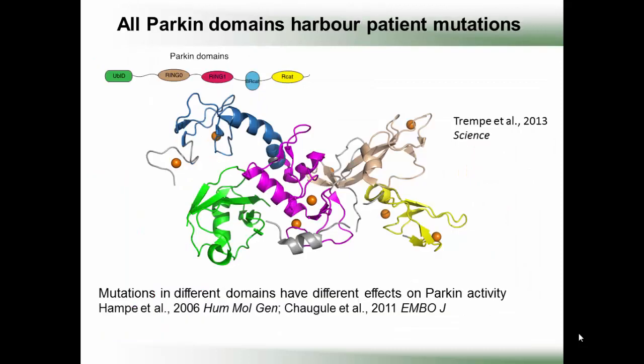Parkin is a multi-domain protein and each domain has pathogenic patient mutations associated with it. Shown here is a mixture of the high-resolution RING0-RBR domains with the lower-resolution UBL domain shown in green, modelled in. The colours of the schematic across the top match the structure.